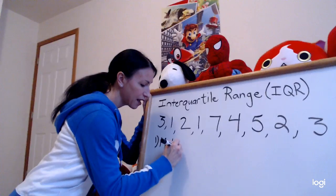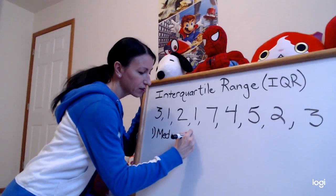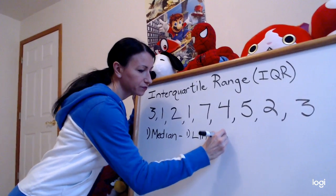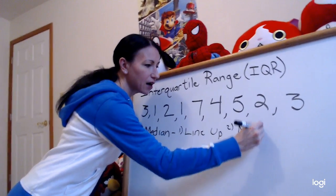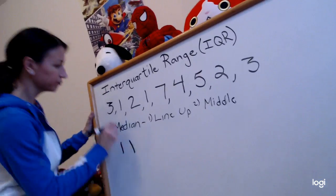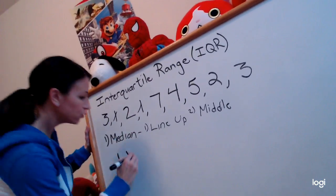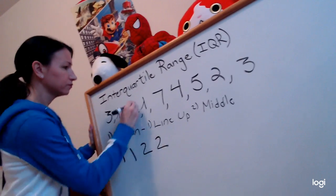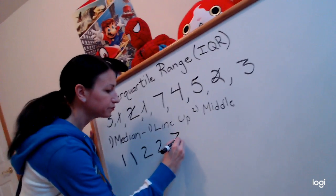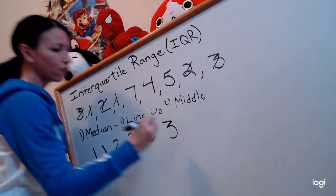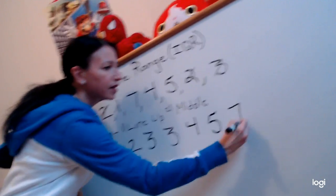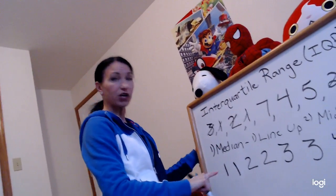First thing I want to do is find the median, and to do that I have to line them up and then find the one in the middle. So I have: two ones, two twos, two threes, a four, a five, and a seven. I always like to count to make sure I got them all.